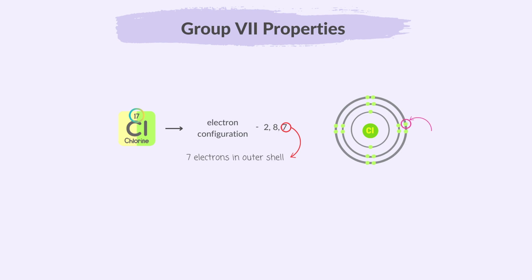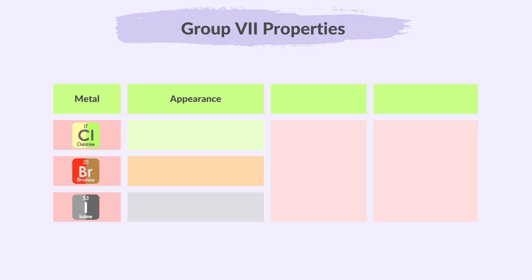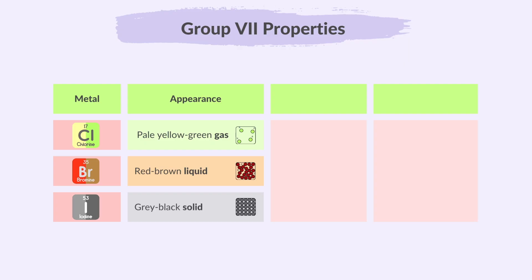Halogens gain one outer electron to get a full outer shell and become halide ions with a minus 1 charge. At room temperature and pressure, these are the appearances of the halogens: chlorine is a pale yellow-green gas, bromine is a red-brown liquid, and iodine is a grey-black solid. Please keep in mind that halogens have distinct colours at room temperature, but their colours change in aqueous solution or as gases. The density increases as you go down group 7, which is reflected in the state of each element — chlorine is a gas, bromine is a liquid, and iodine is a solid.